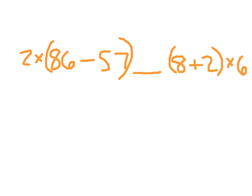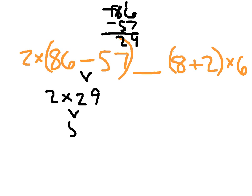I'm going to leave you with one last problem, 86 minus 57. There, we do our parentheses first. This is a little bit different in that we had parentheses. 7 minus 5 is 2. So 86 minus 57 is 29. 29 doubled is 58. I'm comparing that with 8 plus 2, which is 10, times 6, which is 60. So 58 is less than 60. And that's how we compare expressions.